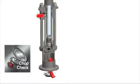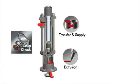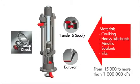Chop check pumps are designed to move medium to high viscosity fluids ranging from 15,000 to more than 1 million centipoises and at delivery rates up to 46.3 LPM.